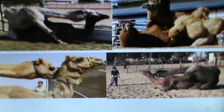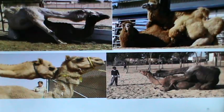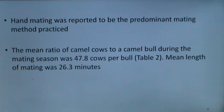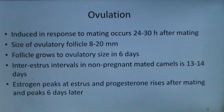These photographs show mating in the camel species — in the Bactrian camel and dromedary camels. Hand mating is the predominant mating method practiced. The mean ratio of females to a camel bull during the mating season was 47.8 cows per bull. The mean length of mating was 26.3 minutes. Ovulation is induced in response to mating and occurs 24 to 30 hours after mating.